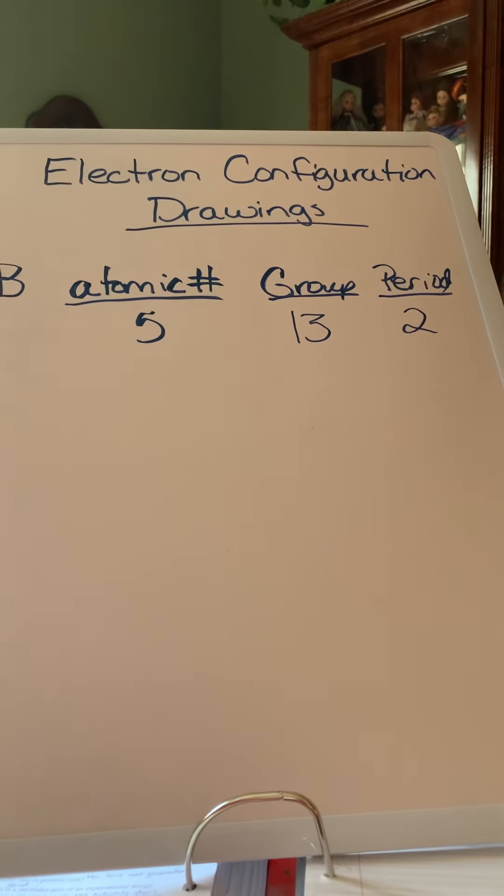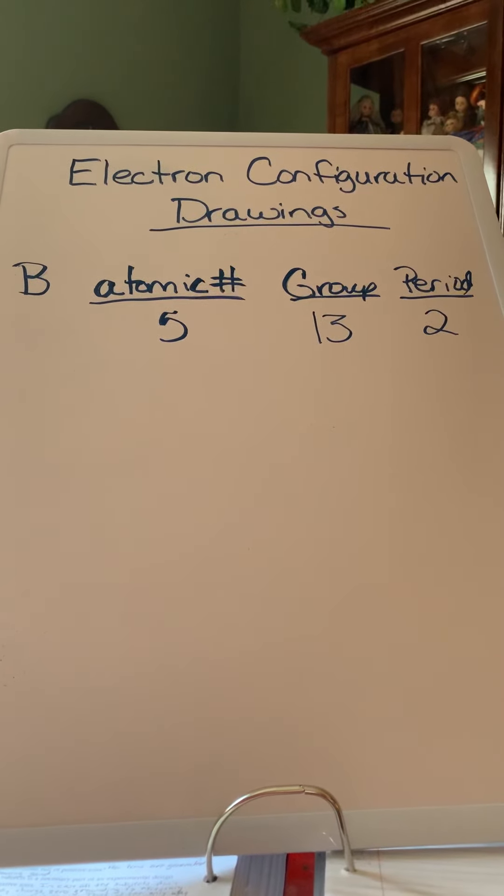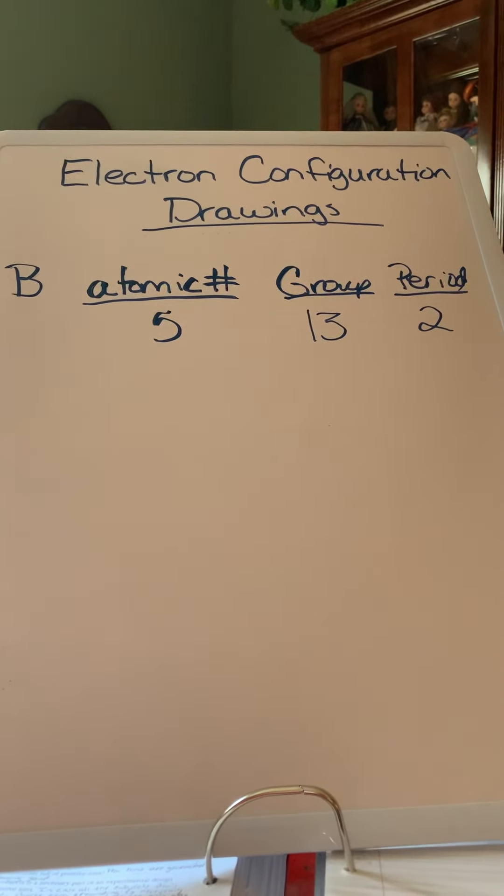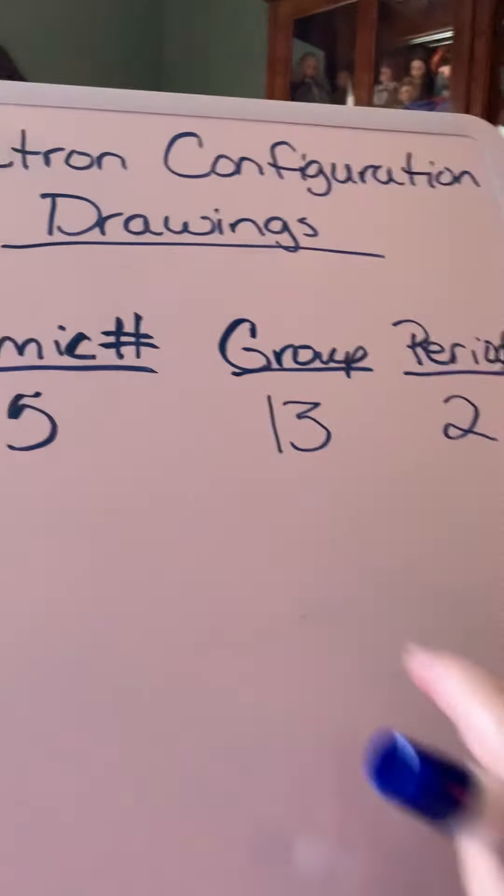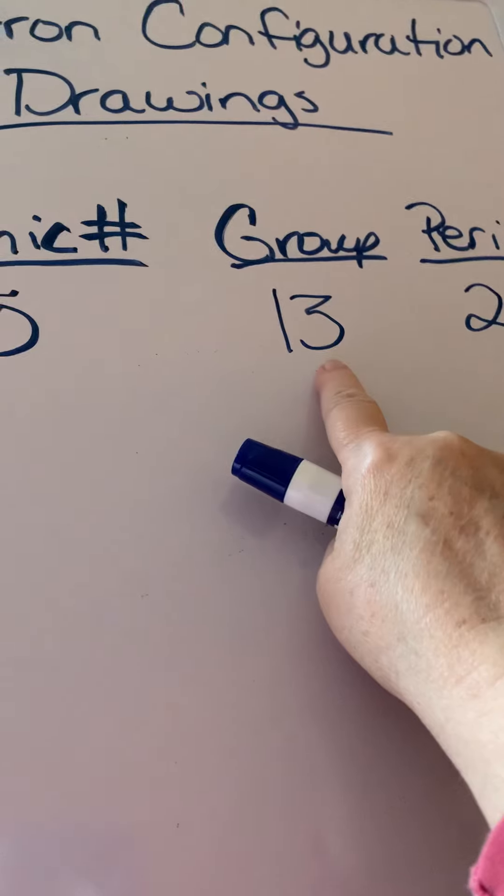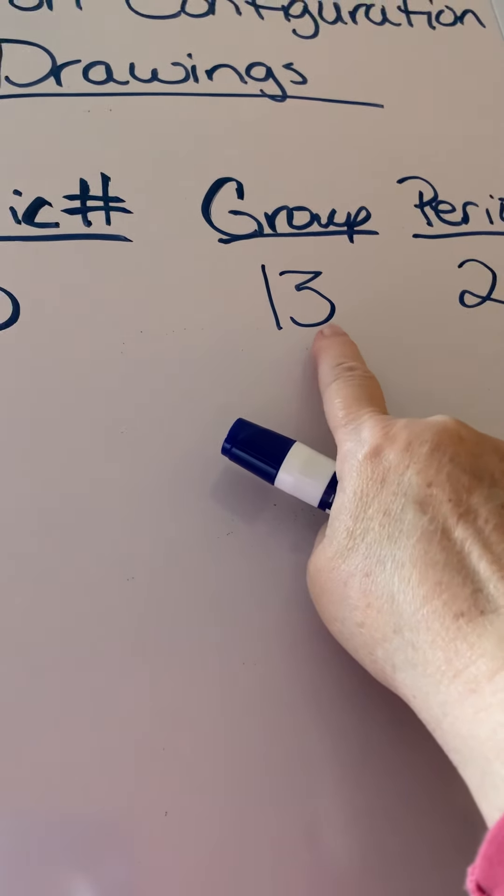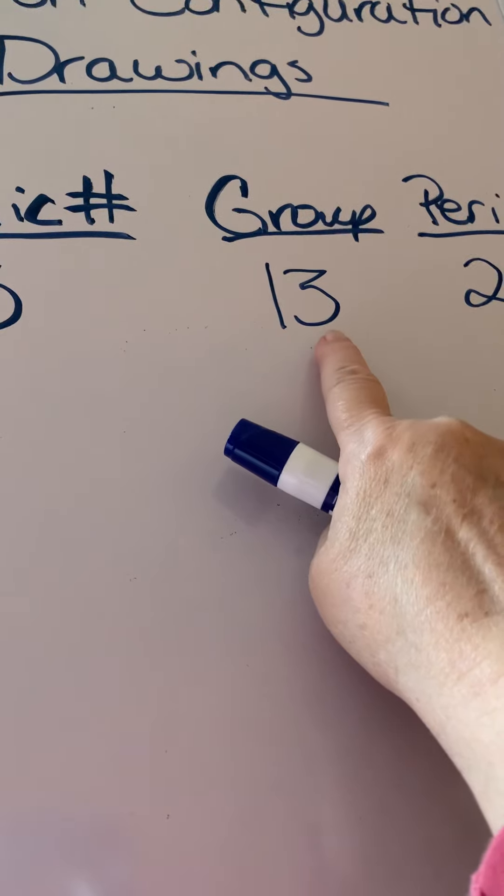What does the group number tell you? I can't hear you. Oh, there it is. I heard somebody say it. It tells you that the three tells you that there are three valence electrons, meaning there are three electrons in the very last shell or orbital of the boron electron cloud.